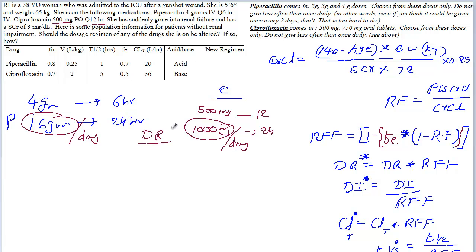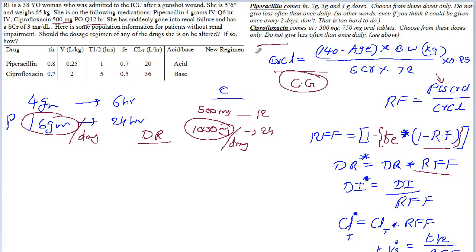Now we have to calculate the new dose rate for this patient, so we have to calculate the renal fudge factors. To calculate the renal fudge factor, we need to calculate the renal function. To calculate renal function, we calculate the patient's creatinine clearance.